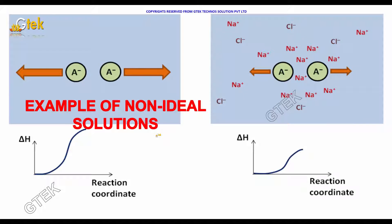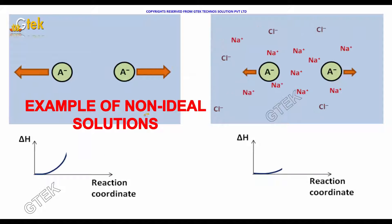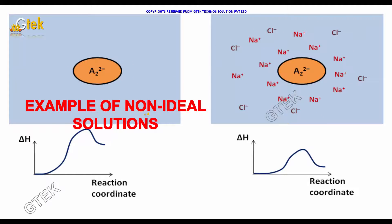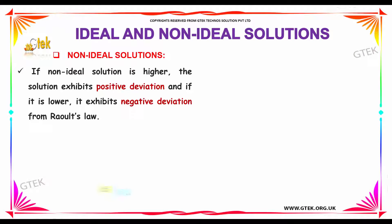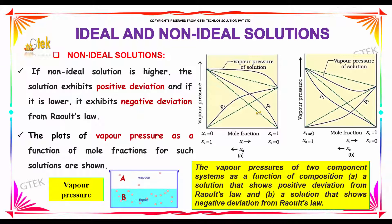Let's see a typical example of non-ideal solutions. If the vapor pressure is higher, the solution exhibits a positive deviation. And if it is lower, it exhibits a negative deviation from Raoult's law. The plots of vapor pressure as a function of mole fraction for such solutions are shown here.